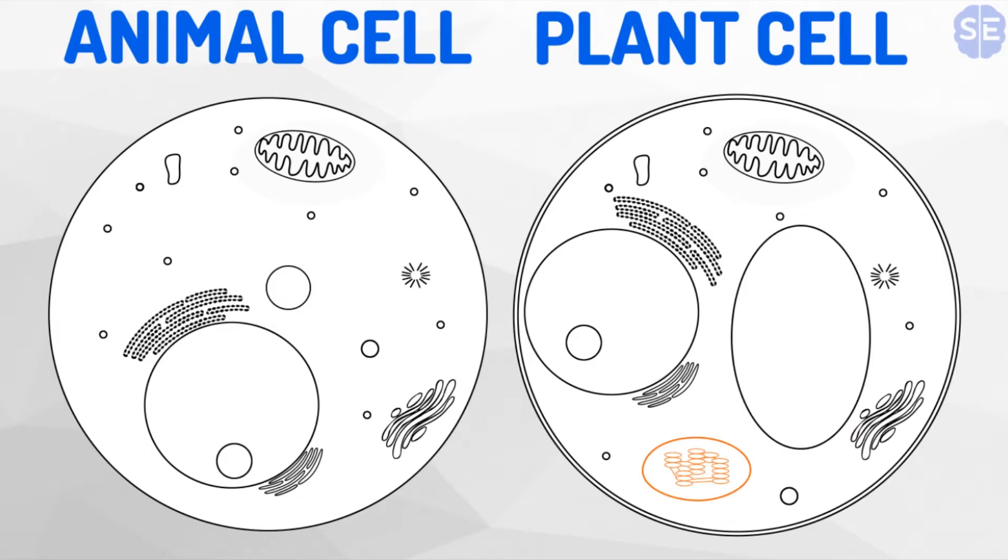The final obvious difference that is present in plant cells and not animal cells is the chloroplast. Chloroplasts give plants their green colour and convert the light energy of the sun into chemical energy in the form of glucose. This glucose can then be used by the mitochondria to produce ATP.